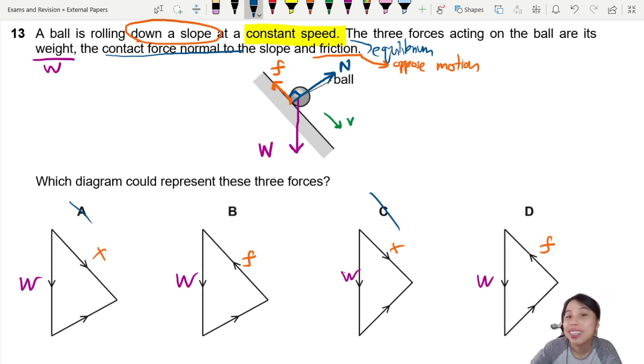Last two. Normal contact force, which is the correct direction based on our diagram above. It looks almost the same. This one also okay, this one also okay. So what is the difference between B and D?